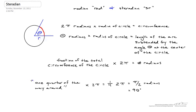For example, if we are 1 quarter of the way around the circle, the angle would be pointing straight up — we could draw another line. One quarter of the way around, multiplied by 2π, gives us 1/4 × 2π, which equals π/2 radians, or what we know as 90 degrees. So a 90-degree angle makes a length of arc that's 1 quarter of the way around the entire circle.